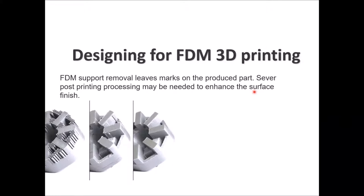FDM support removal can leave some marks, and severe post-printing processing could be needed if you need your part to be as perfect as possible. Going from left to right, this part has medium complexity with some supporting materials. Post-processing could involve cutting the supporting material with a knife or sharp tools, then removing rough surfaces using surface finishing papers or surface finishing machines to make the surface as smooth and perfect as the designer needs.